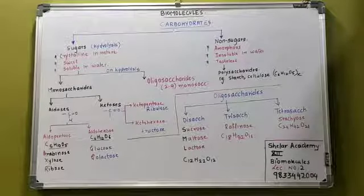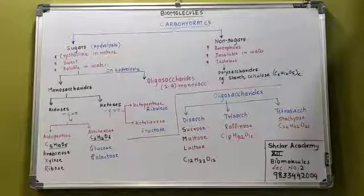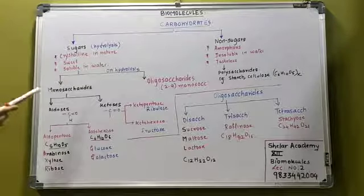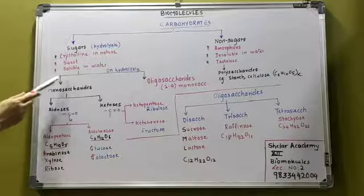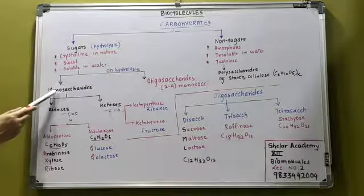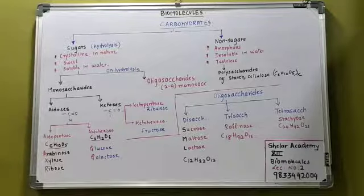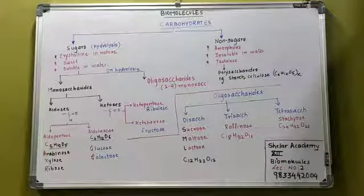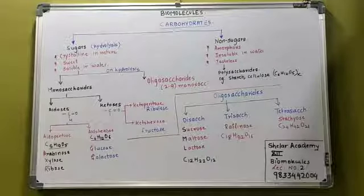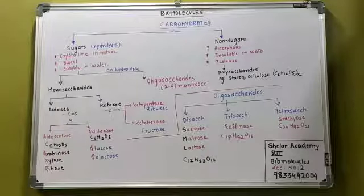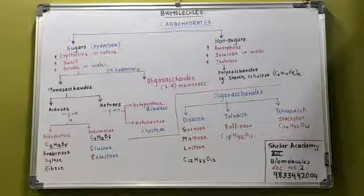The next classification of the sugars is based on the hydrolysis of them. Sugars are classified as monosaccharides. Monosaccharides cannot be hydrolyzed further — mono means 1, and one cannot be divided further.